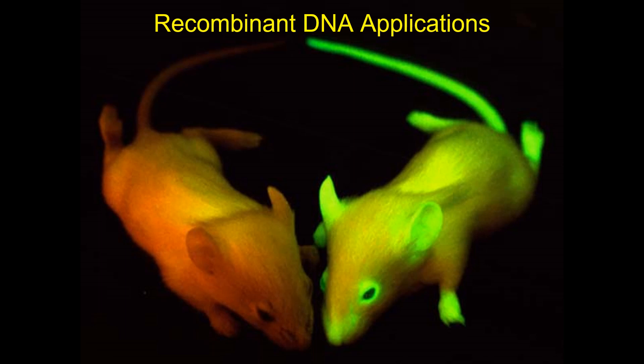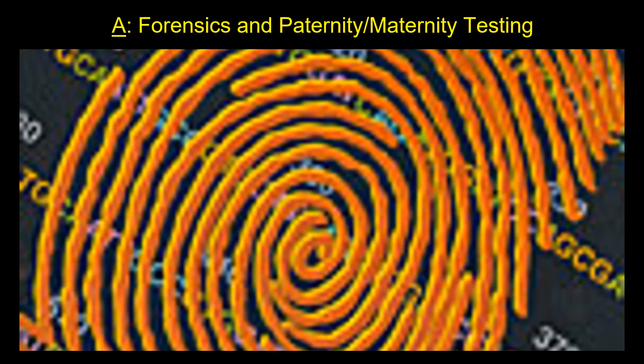Last day we talked about recombinant DNA and how we use different protocols, techniques, and equipment to copy DNA, and also to take bits and pieces of DNA and splice them together to create something new. Today we're going to talk more about the applications of that. We'll start off by looking at the applications in forensics and also in paternity and maternity testing.